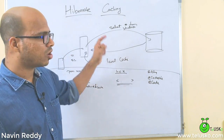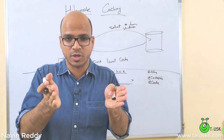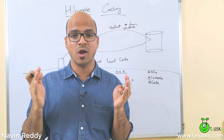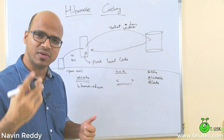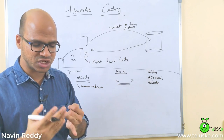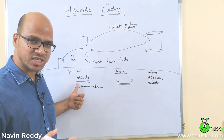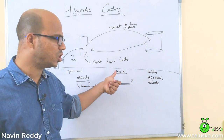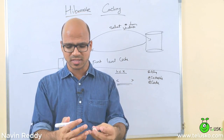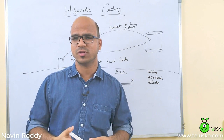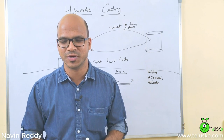To summarize: Hibernate provides first level cache, which is scoped to a particular session. For sharing data across multiple sessions, we use second level cache. For second level cache we need a provider — EHcache, OSCache, or Swarm — with EHcache being the most preferred. You need to configure your pom.xml, your Hibernate configuration file, and add the @Cacheable and @Cache annotations on your entity. The practical implementation will be covered in the next video. If you haven't subscribed, please do, and thank you for watching.